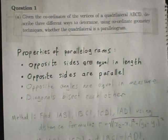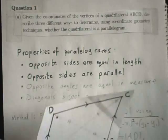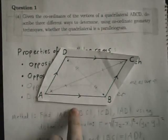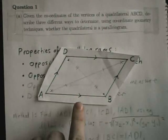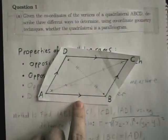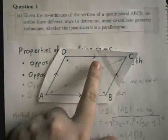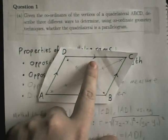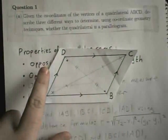Number 2: opposite sides are parallel. So if we take a look at our parallelogram again, side AB here is parallel to side CD, and side BC is parallel to AD.